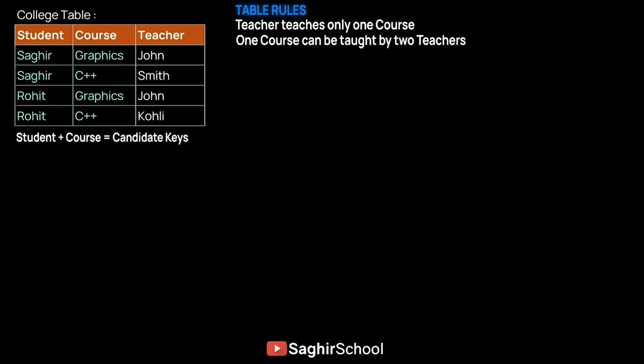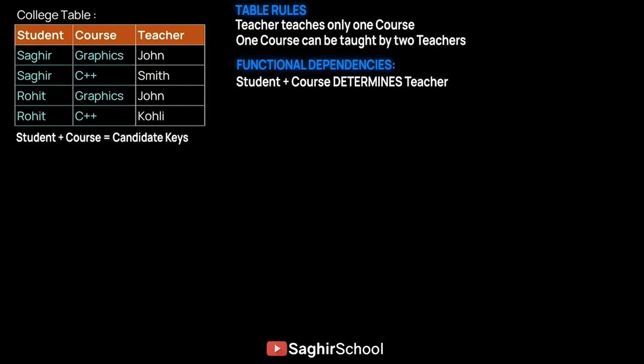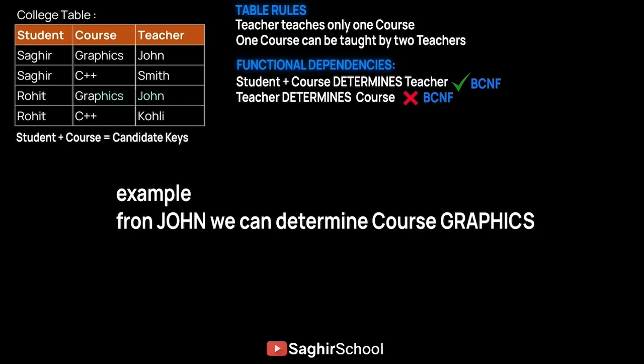The table has a set of rules: a teacher can only teach one course, and a course can be taught by multiple teachers. The functional dependencies are: Student + Course determines Teacher — which is fine and does not violate BCNF. However, Teacher determines Course — this violates BCNF, because a non-prime key cannot determine a prime key, and that's exactly what happens here.